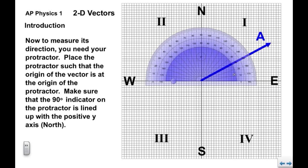If you look here, the inner ring of numbers. Here's my zero degrees, and then 10, 20, 30, 40, up to 90 at north. This inner ring are the mathematical axes on this protractor.